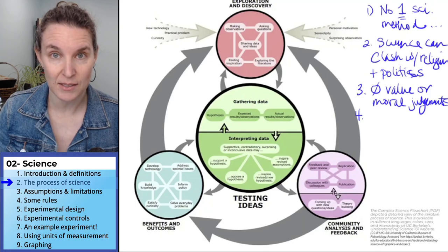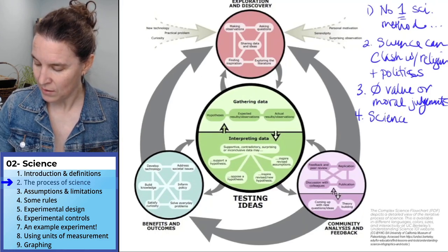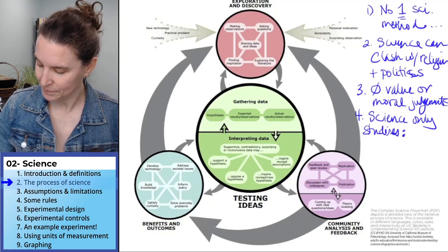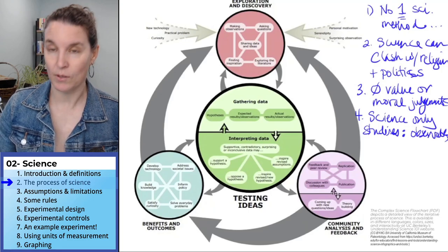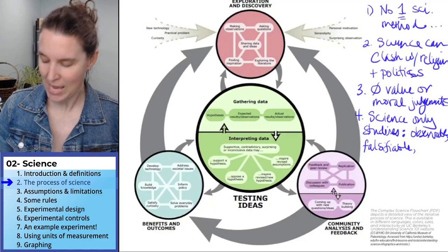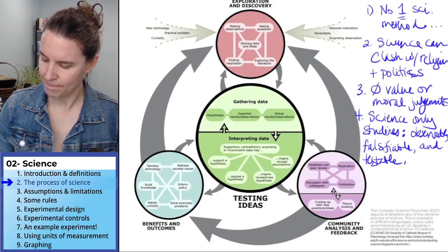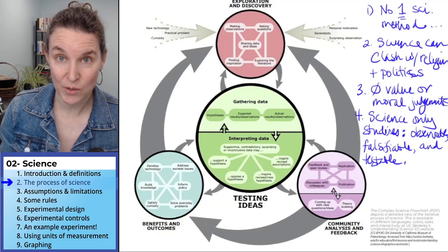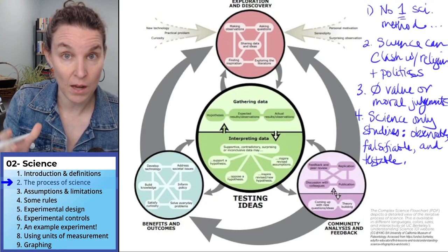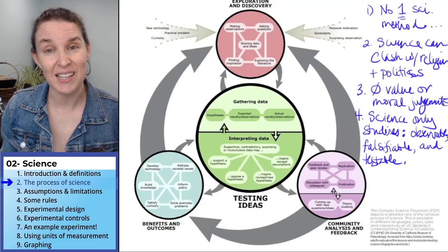Not everything can be studied with science. Science only studies things that are observable, falsifiable, and testable. You can't study something using the process of science if you can't test it, if you don't know what it would look like to falsify it — to prove it not true — and if you can't actually observe things about it. That means not everything can be studied with science, and I think that's really important.